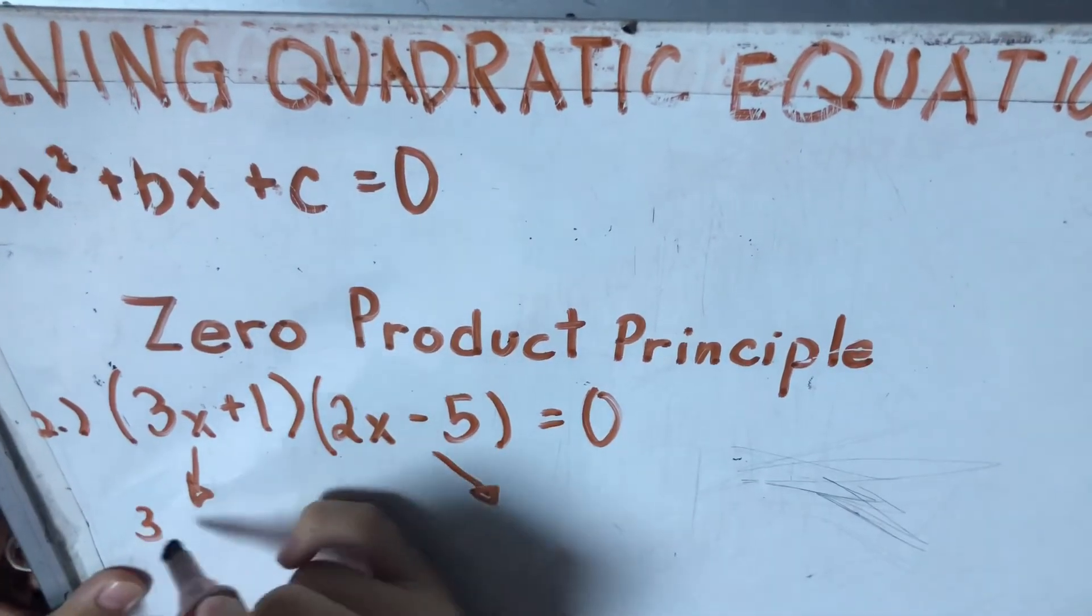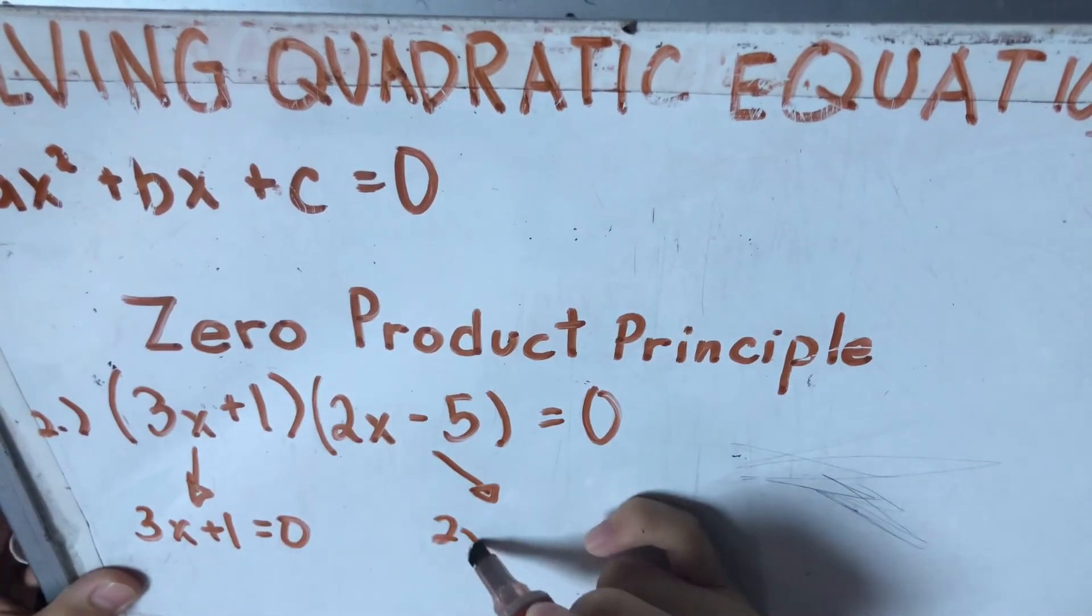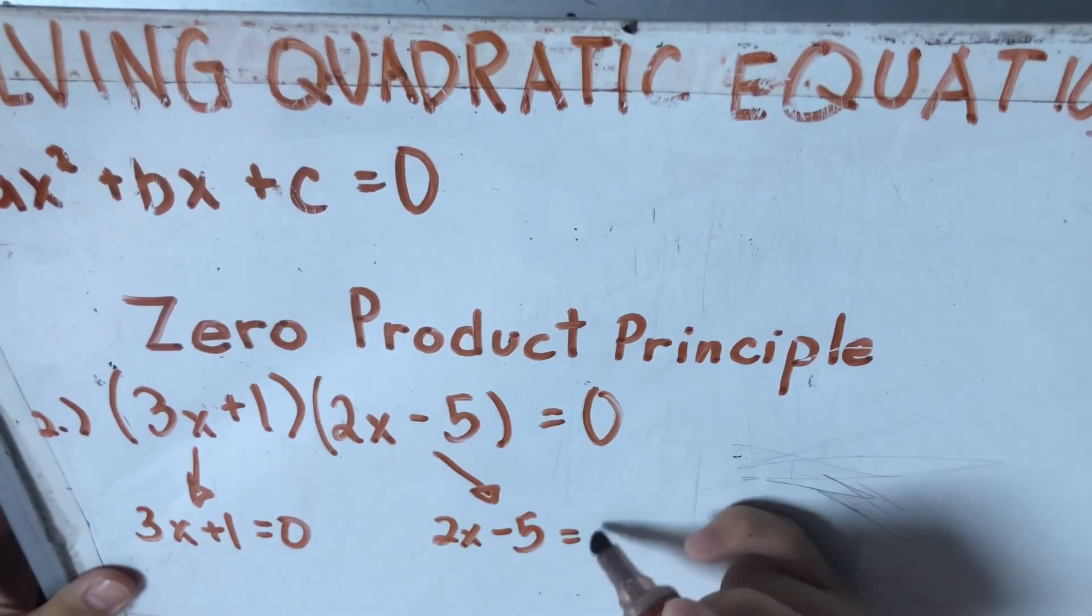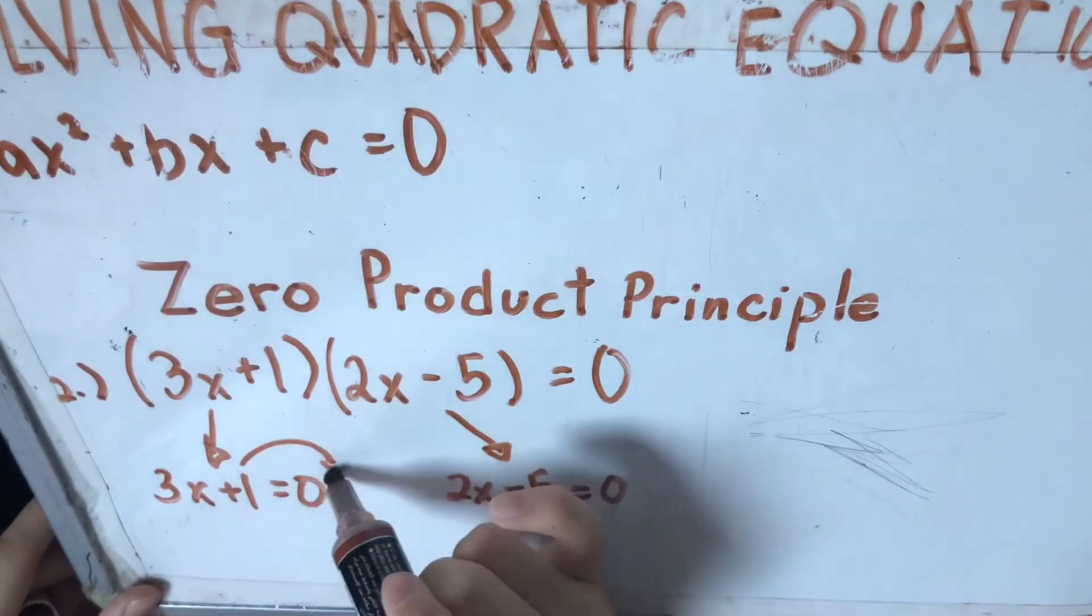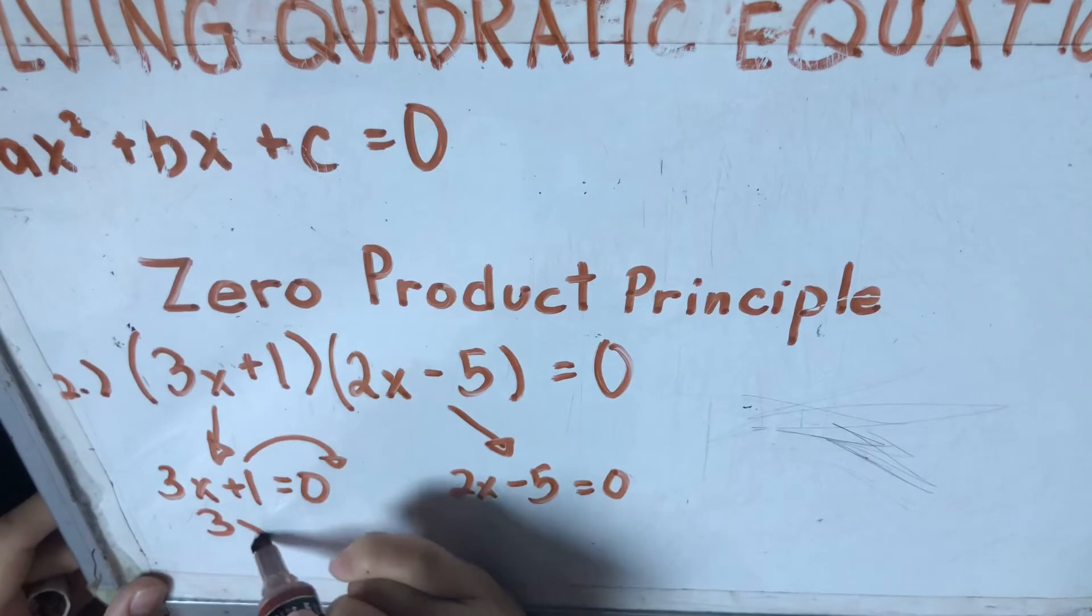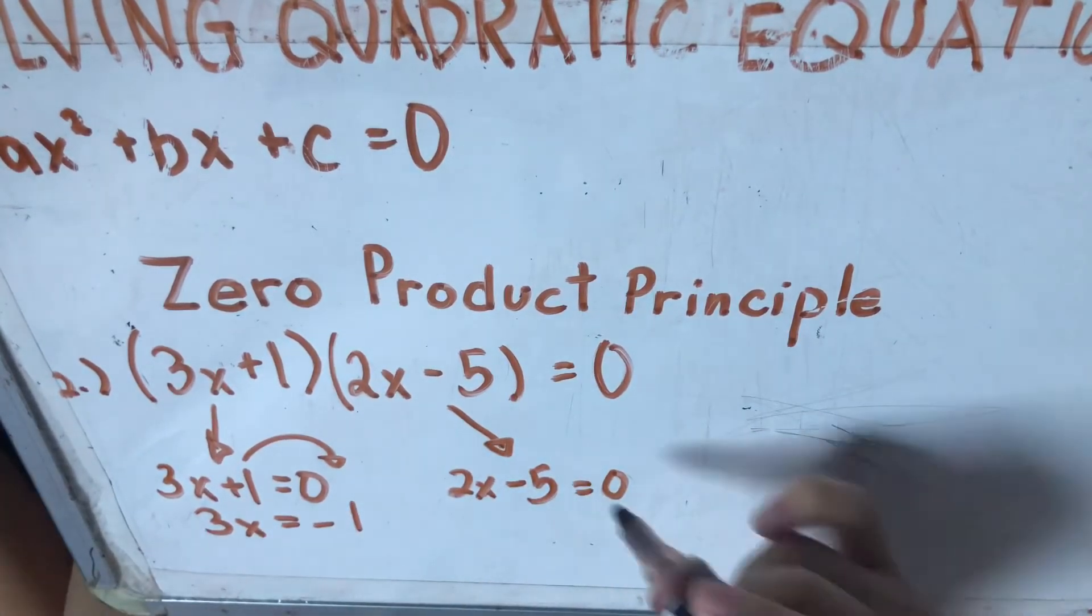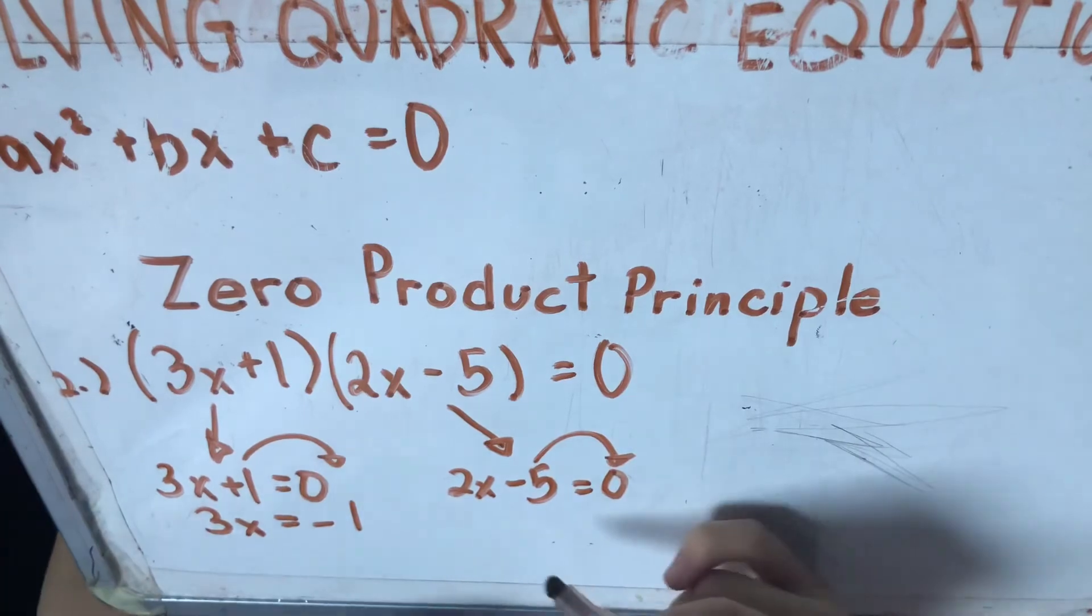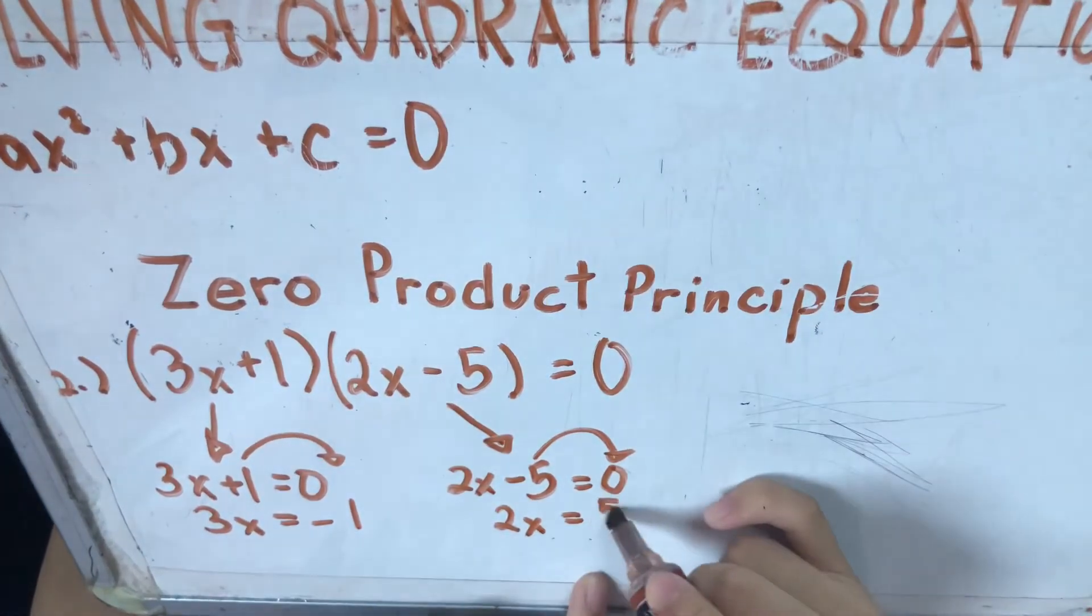So, 3x + 1 = 0. Tsaka, 2x - 5 = 0. So ililipat mo na natin ito, magiging 3x = -1. Gawin din dito, lipat natin si negative 5. So magiging 2x = 5.